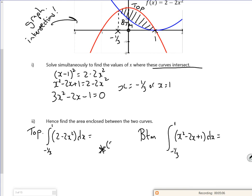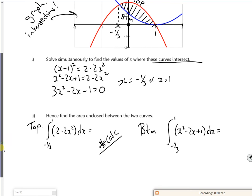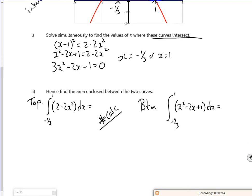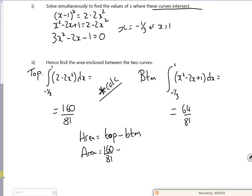So, if it doesn't tell you to justify the working, you can put it straight in the calculator. So, for my top one, I think that is 160 over 81. I might have got these wrong way around. And then for my bottom one, I get 64 over 81. And my enclosed area is just the top, save the bottom.